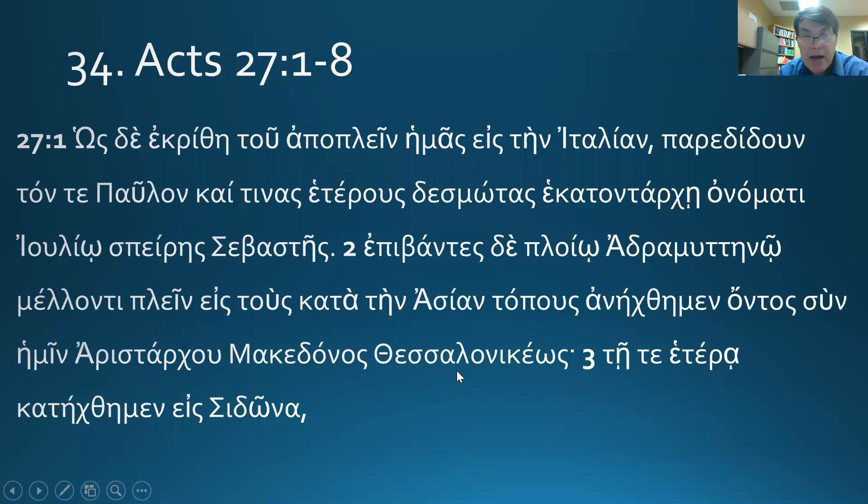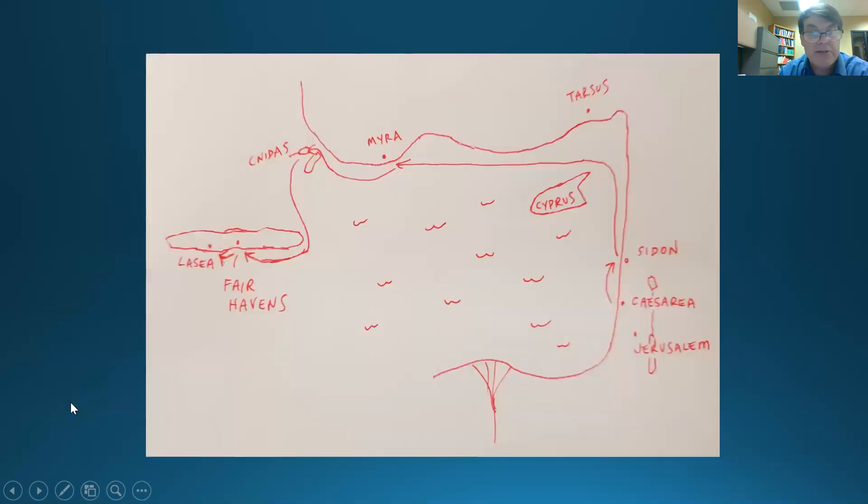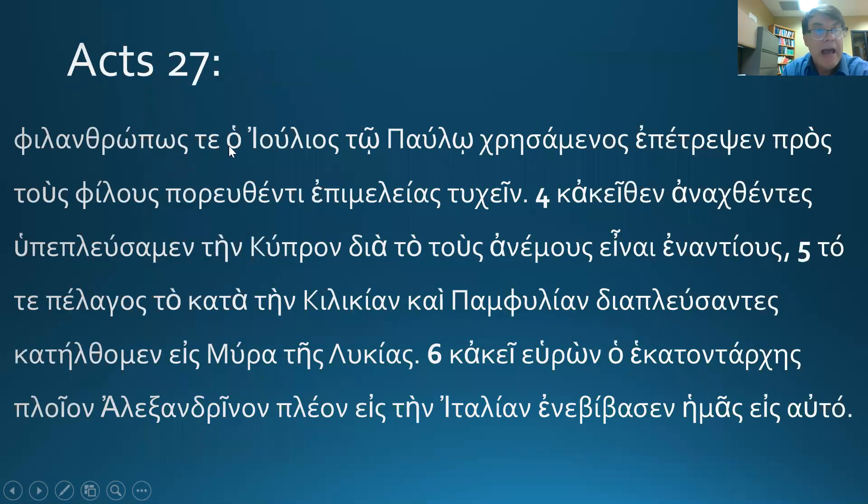So anyway, on the next day, we go down to Sidon, and Julius, who's the centurion, commander of a hundred, behaving, having behaved kindly to Paul. So Sigma Alpha, yes, that's right. It's aorist. This is krao-mai, it's deponent. So men are passive or middle participles. Notice the endings after it. So it's not a first-person plural.